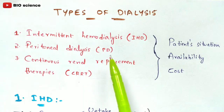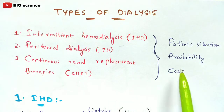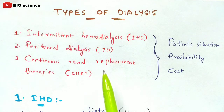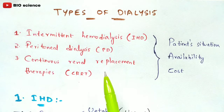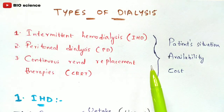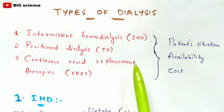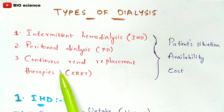The choice of dialysis depends on several factors such as patient situation, availability, and cost. Each type has its own cost — some are more expensive, some less. It also depends on the degree of kidney failure, whether the kidneys are 50%, 75%, or 80% failed.